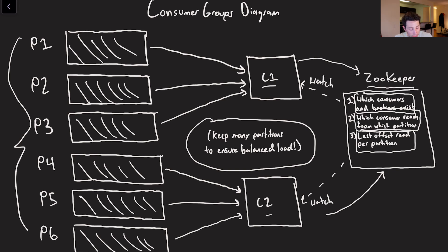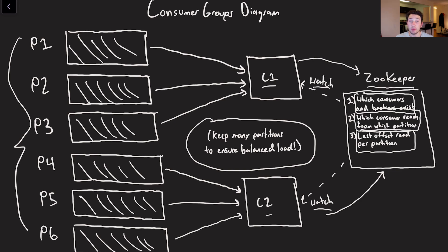Another thing that we do in Zookeeper is register something known as a watch. Think of a watch as — every time that Zookeeper changes its data, it's going to notify both C1 and C2. Upon being notified, C1 and C2 are going to ask whether there are any more consumers or any more partitions. If so, they need to recalculate which partitions they're responsible for reading, and then claim them again in Zookeeper. The last thing to note is we have this concept of a last offset read per partition.